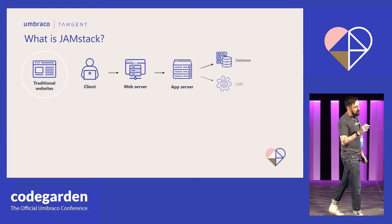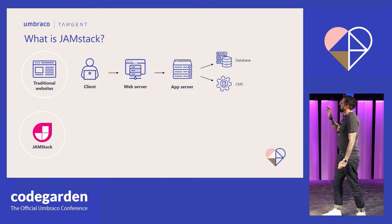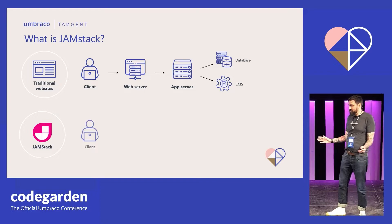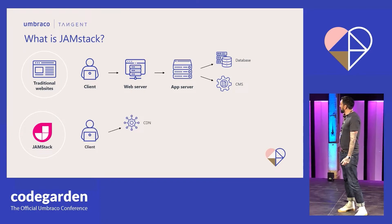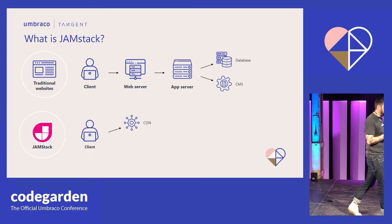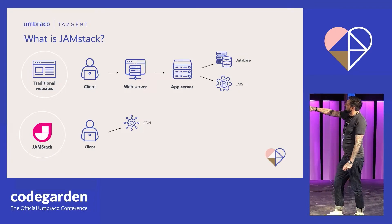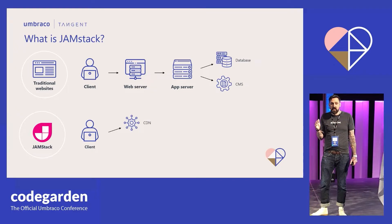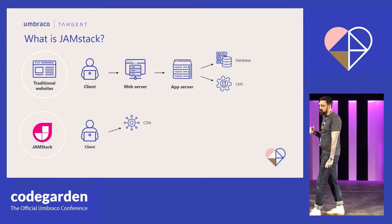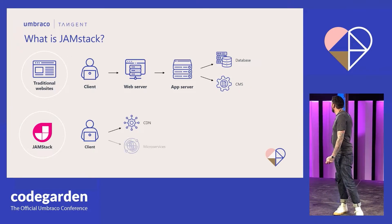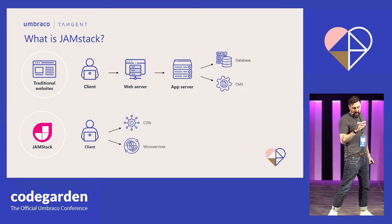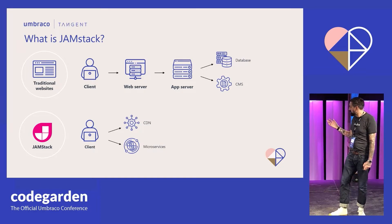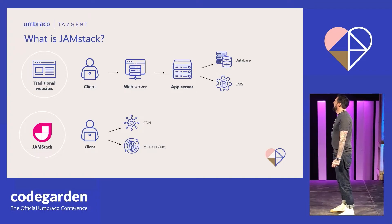Now with Jamstack, we pre-render pages rather than going through all those steps. Users still have a browser — those things haven't changed. But instead, the user will hit a pre-rendered piece of HTML that sits inside a CDN. So instead of going all the way down the chain, you've only got that single HTTP request to a CDN, which we can globally distribute and handle incredible amounts of load.